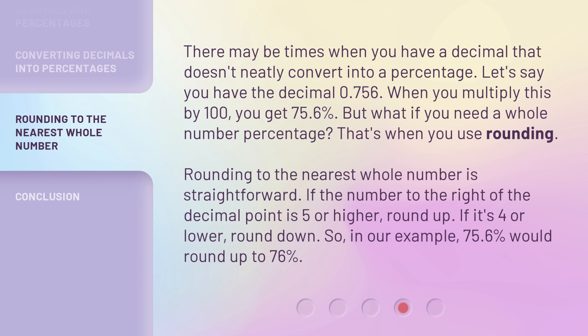Rounding to the nearest whole number is straightforward. If the number to the right of the decimal point is 5 or higher, round up. If it's 4 or lower, round down. So, in our example, 75.6% would round up to 76%.